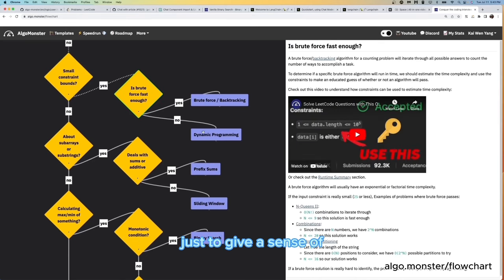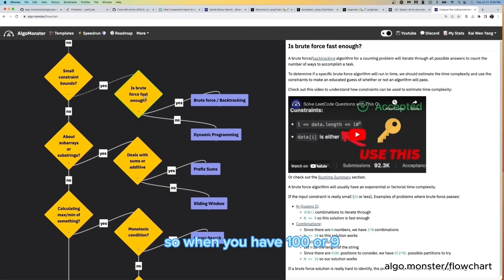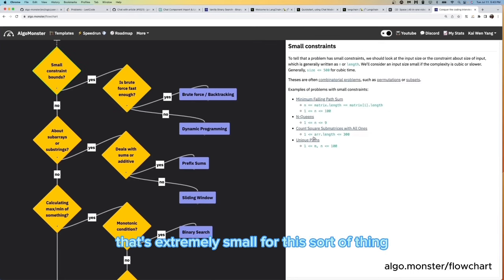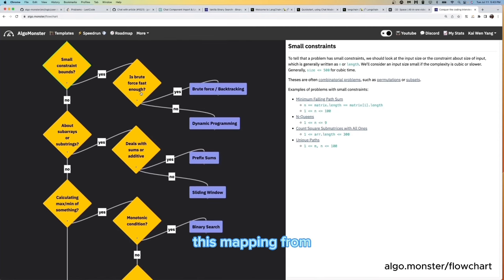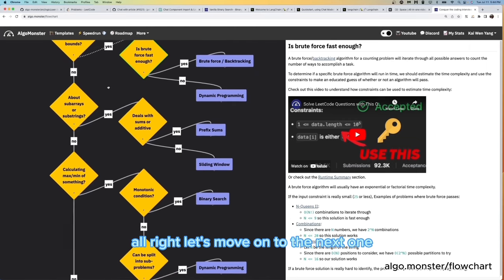Right. So just to give a sense of what a constraint normally looks like, normally for most problem is maybe around 10 to the power of five to 10 to the power of nine. So when you have a hundred or nine, that's extremely small for this sort of thing. And if you're curious about how we derived this mapping from the constraint to algorithm, you can watch that video here. And also for solving dynamic programming, we have another dedicated one and a half hour video you can check out.